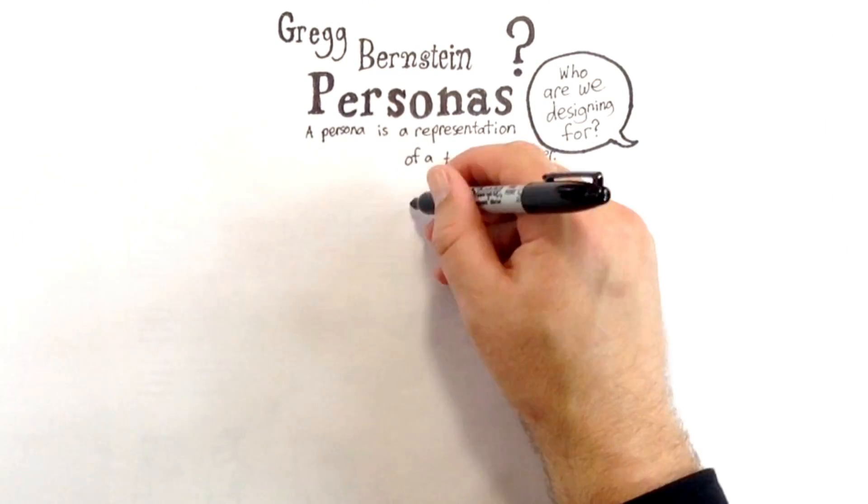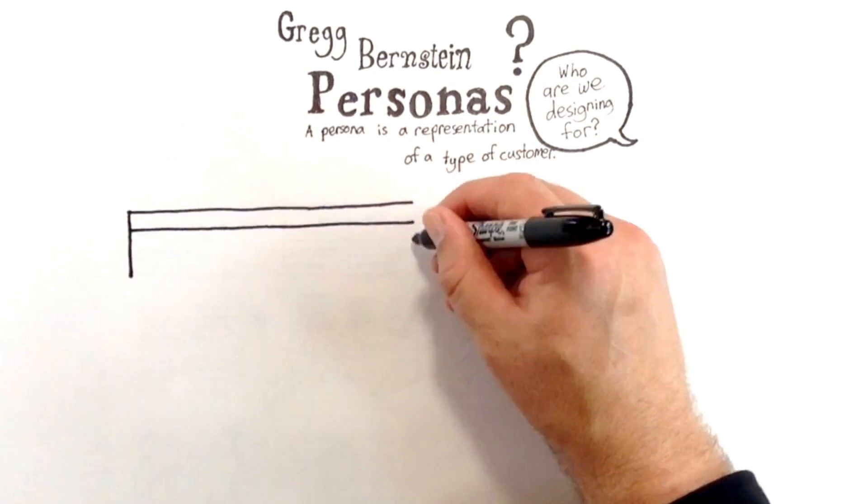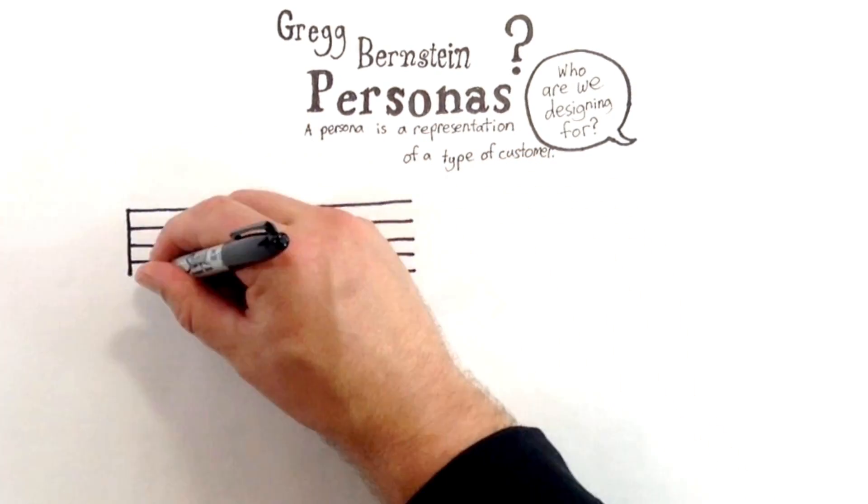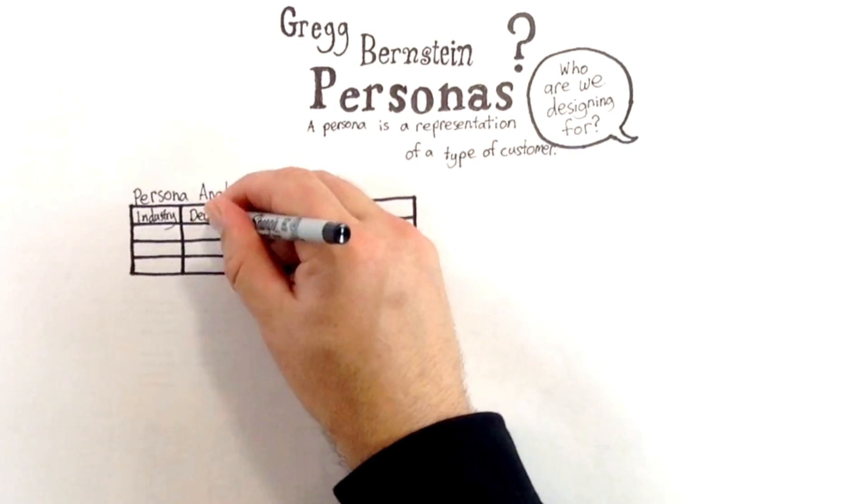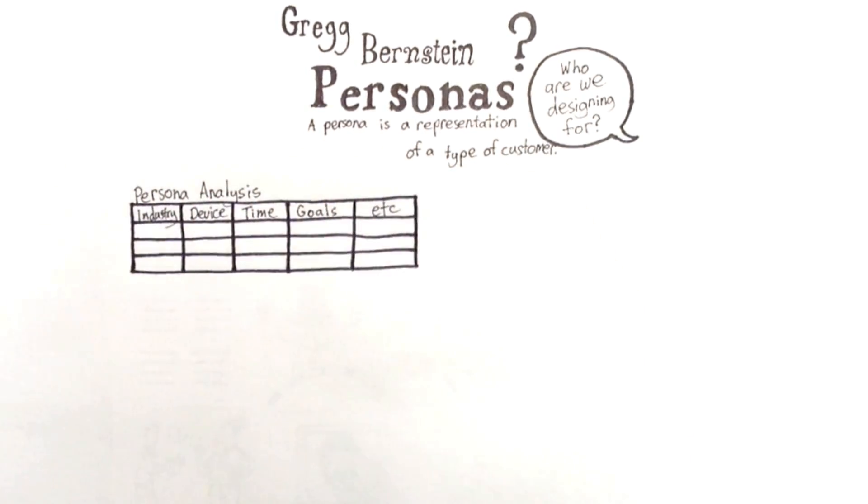So how do you conduct a persona analysis? You can begin by compiling everything you know about your customers and grouping your findings in a spreadsheet. You can use headings relevant to your areas of study such as industry, device, time, and goals.